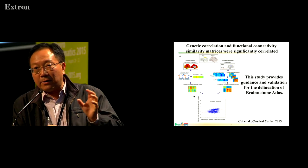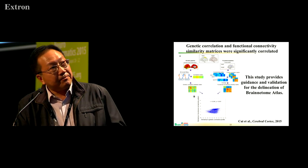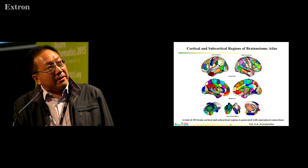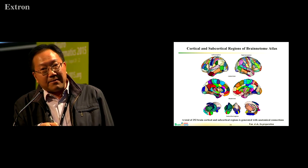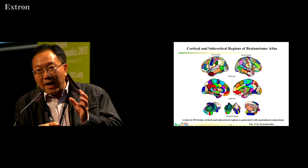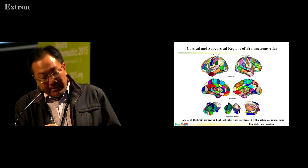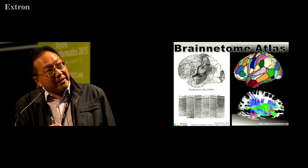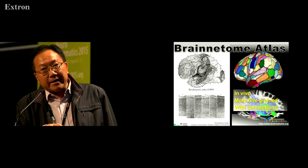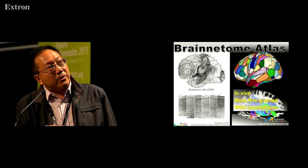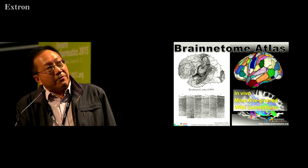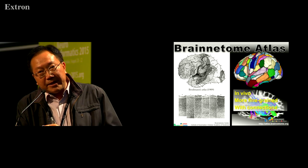If the technology is good, you should find the same result. For the Brainnetome model, we parcellate the whole brain — both cortical and subcortical regions — into 252 different parts. Each part has a very good biological mechanism. In summary, the Brainnetome model has three different features: it is available, provides fine-grained topography, and also provides functional connectivity and anatomical connectivity.